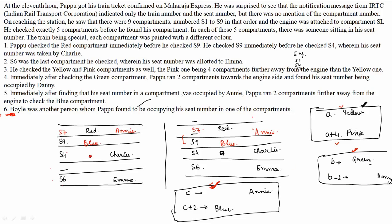Now checking green and Danny: if green is at position B, Danny is at B minus 2. Testing the first case: if green is at S2, Danny should be at a blank position — but checking both cases, we find that in the second case placing green leads to a contradiction where Danny cannot be placed. Therefore the second case is eliminated. We are left with only one valid possibility.